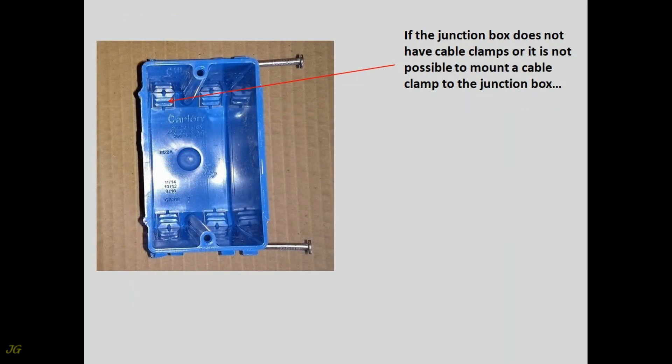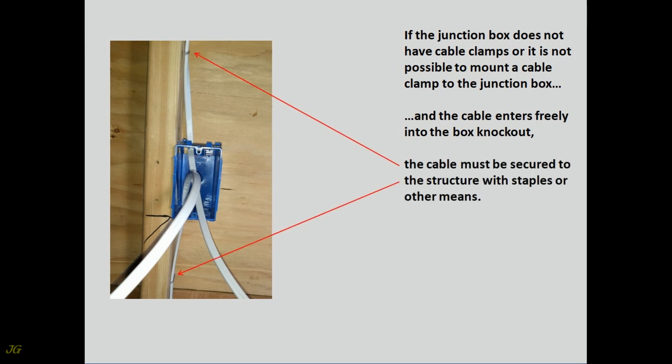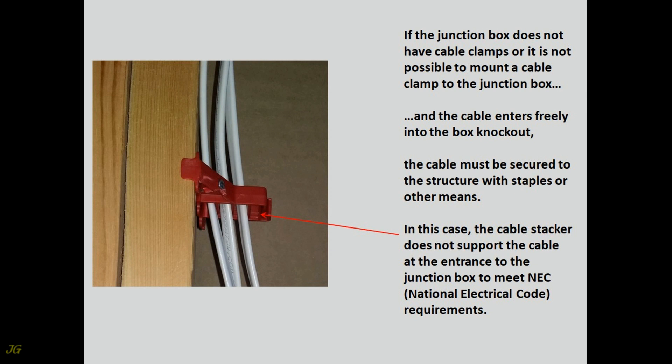If the junction box does not have cable clamps or it is not possible to mount a cable clamp to the junction box, and the cable enters freely into the box knockout, the cable must be secured to the structure with staples or other means. In this case, the cable stacker does not support the cable at the entrance to the junction box to meet NEC, National Electrical Code, requirements.